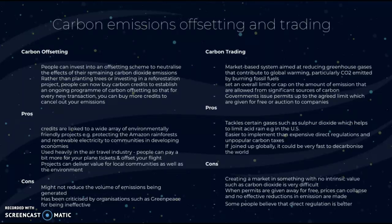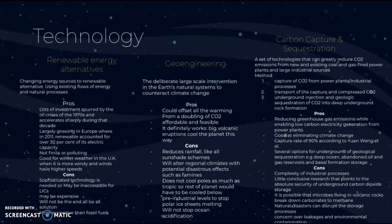Now we'll look at technology in terms of its adaptation and mitigation abilities for global climate change. First, renewable energy alternatives — changing energy sources to renewable alternatives using existing flows of energy and natural processes. The pros are that there has been lots of investment spurred by the oil crises of the 1970s, during which the use of renewable energy alternatives accelerated sharply. It is largely growing in Europe, where in 2011 renewable energy accounted for over 30 percent of electric capacity.